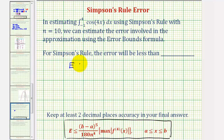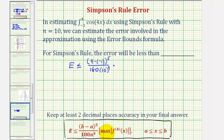The error is less than or equal to the quantity b minus a to the fifth, where a is negative one and b is four, so we have the quantity four minus negative one, raised to the fifth, divided by 180 n to the fourth where n is 10, multiplied by the absolute value of the maximum function value of the fourth derivative on the closed interval from negative one to positive four.